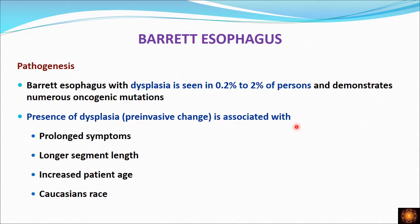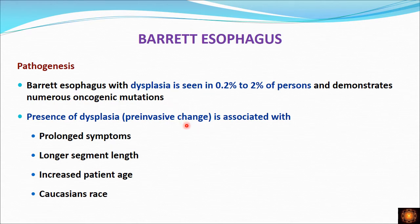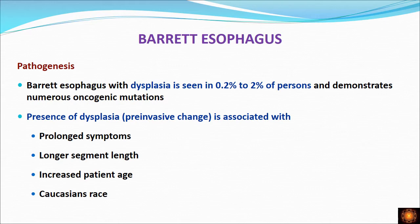The intestinal metaplasia can also develop dysplastic changes, seen in 0.2% to 2% of cases. From this dysplasia, the patient can later develop adenocarcinoma, and cells with dysplasia have demonstrated certain oncogenic mutations. Dysplasia is associated with factors such as prolonged symptoms, a longer involved esophageal segment, older patient age, and Caucasian race.